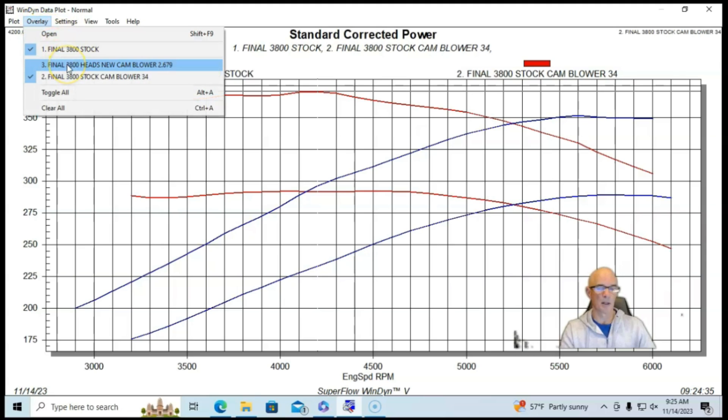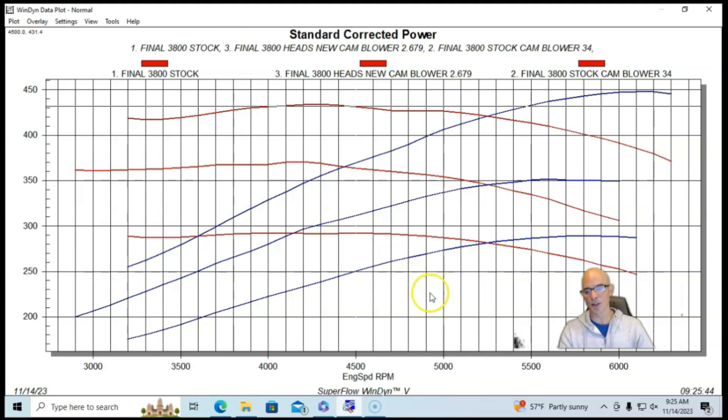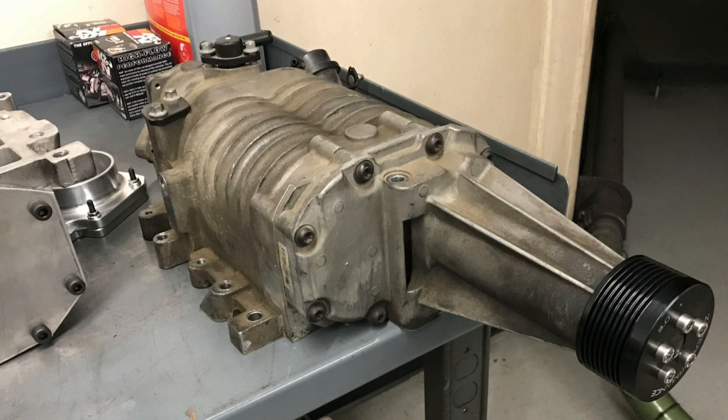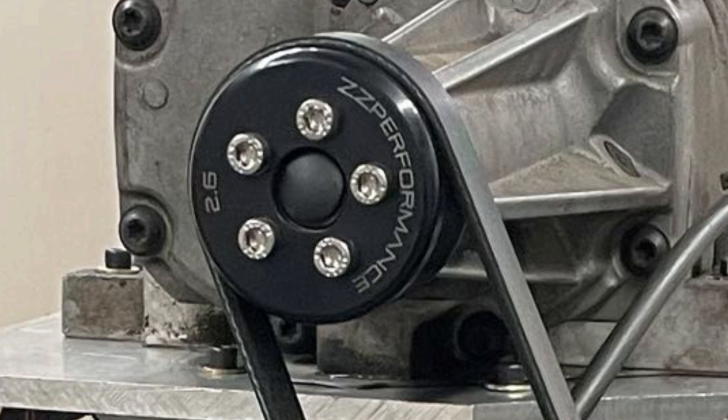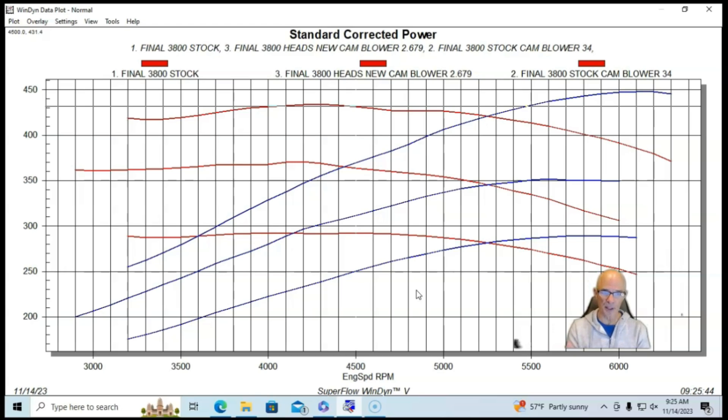Here's what happened when we stepped our game up to the big boy setup. So this was the Gen 5 blower with the 2.6 inch blower pulley, spinning this thing up quite a bit. I'll go ahead and put the different boost levels up for the different pulleys here.